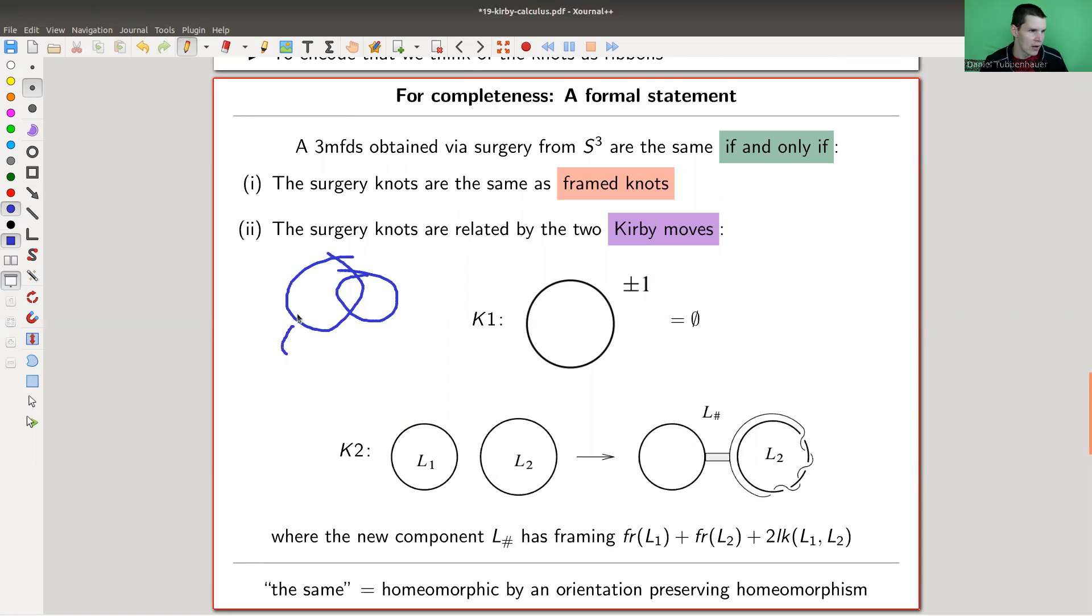So we have a collection of those things here somewhere, intersecting, whatever. And they are numbered by some numbers, five, minus two, one, something like that. And they describe by a surgery, we already know that, a three manifold. And the three manifolds are the same obtained by surgery, if and only if, it's really an if and only if statement, it's as beautiful as it could get. And it's really, really simple. So the first one is just saying, there's the same after Reidemeister moves. So we have the same knots as framed knots. So there's the same Reidemeister moves. And you can still kind of play a little bit around with the surgery knots. And there are two extra moves.